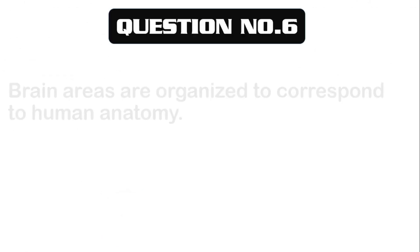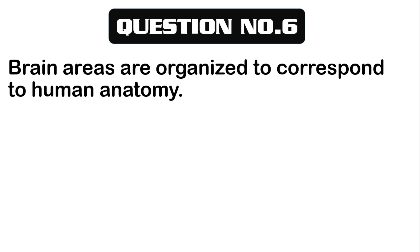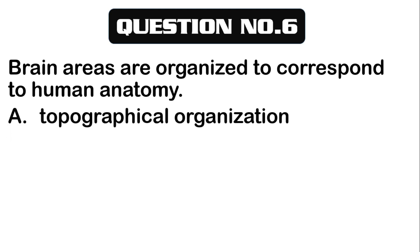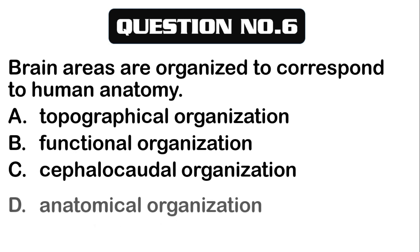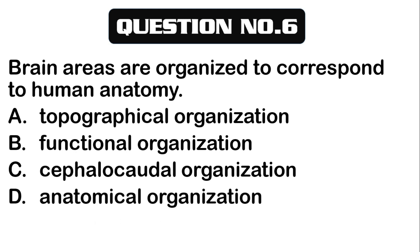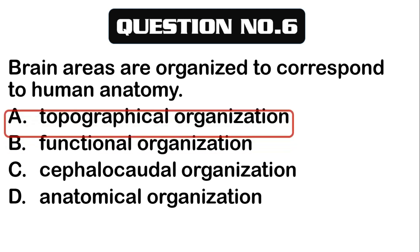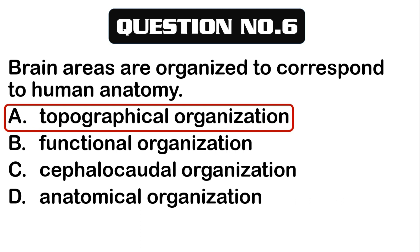Number 6. Brain areas are organized to correspond to human anatomy. The correct answer is letter A, Topographical organization. Brain areas are organized to correspond to human anatomy — Topographical organization.